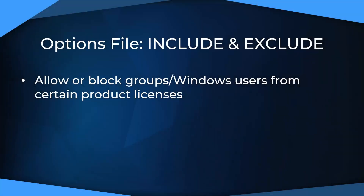Another function that can be used is to only allow certain Windows users to access certain SOLIDWORKS products from the network pool. You can set up a group and define all associated Windows users in that group by their Windows usernames, then use the INCLUDE or EXCLUDE functions to either allow access or block those groups — or even specific users in that group — from taking certain licenses.